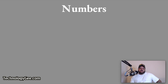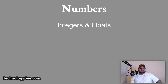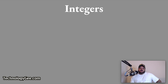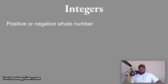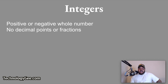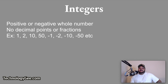Next, we're going to talk about numbers. Numbers are the most common data types and they come in mainly two forms: integers and floats. An integer is a positive or negative whole number with no decimal points or fractions. Examples of integers could be numbers such as 1, 2, 10, 50, or negative 1, negative 2, negative 10, negative 50, etc.